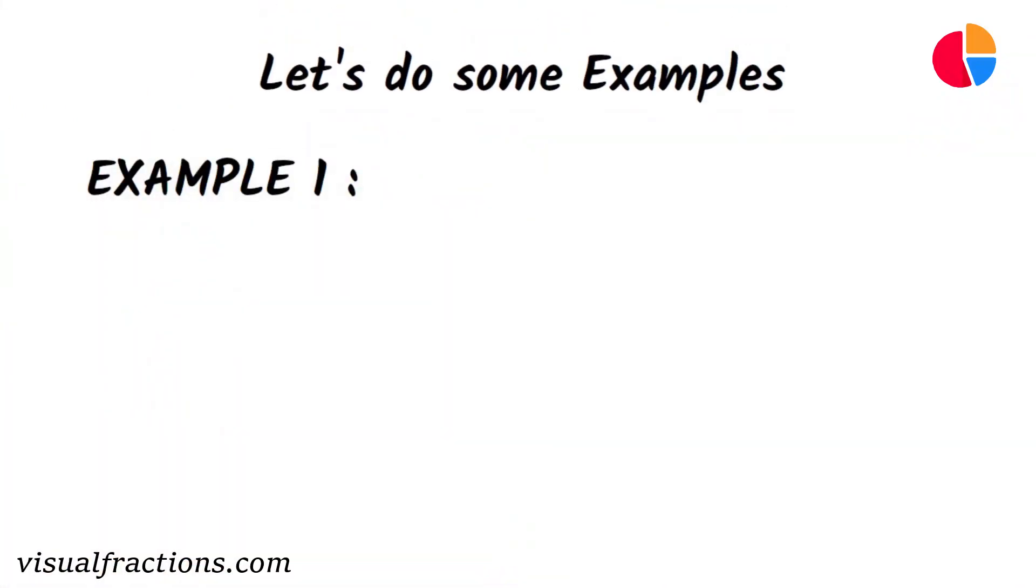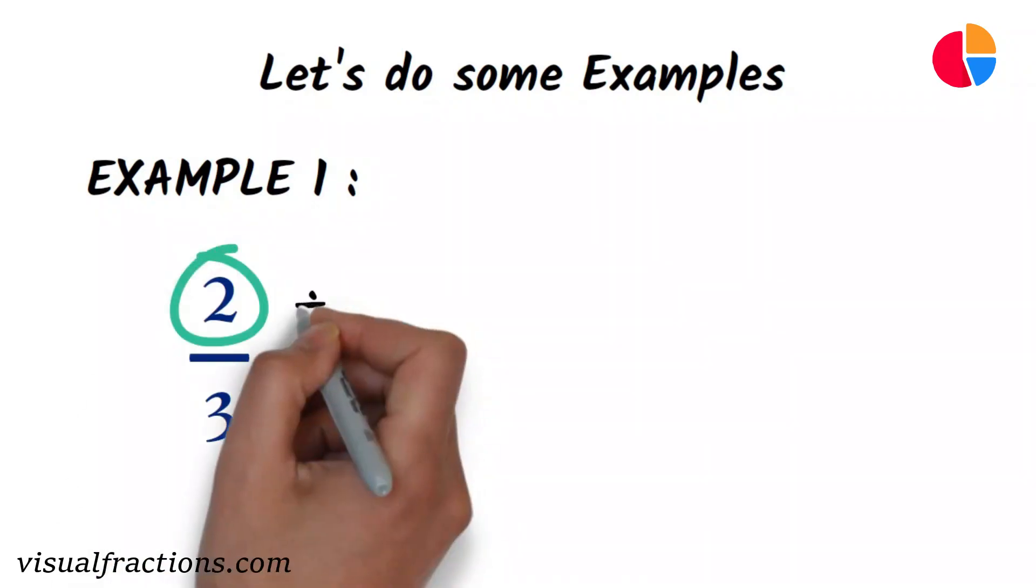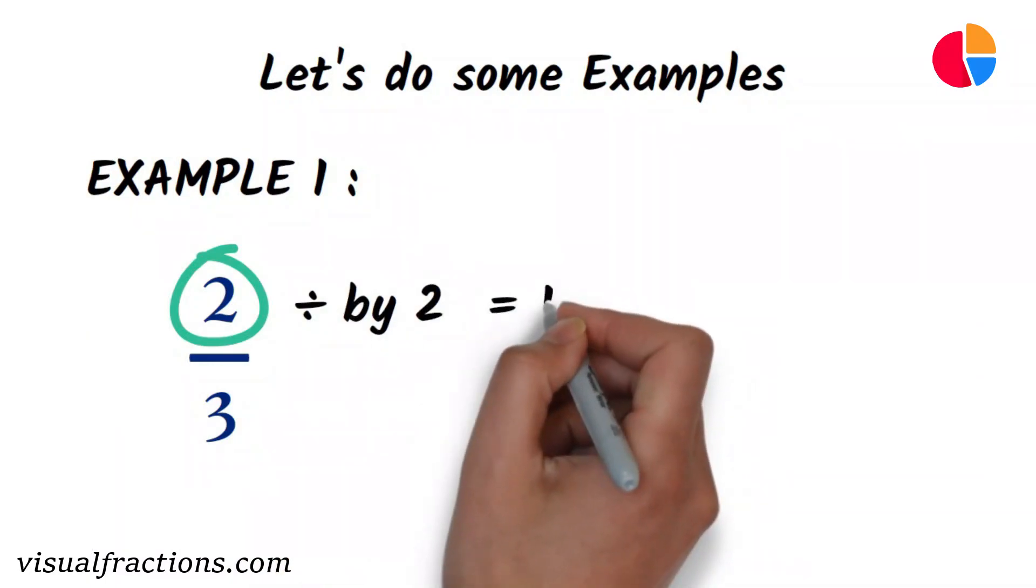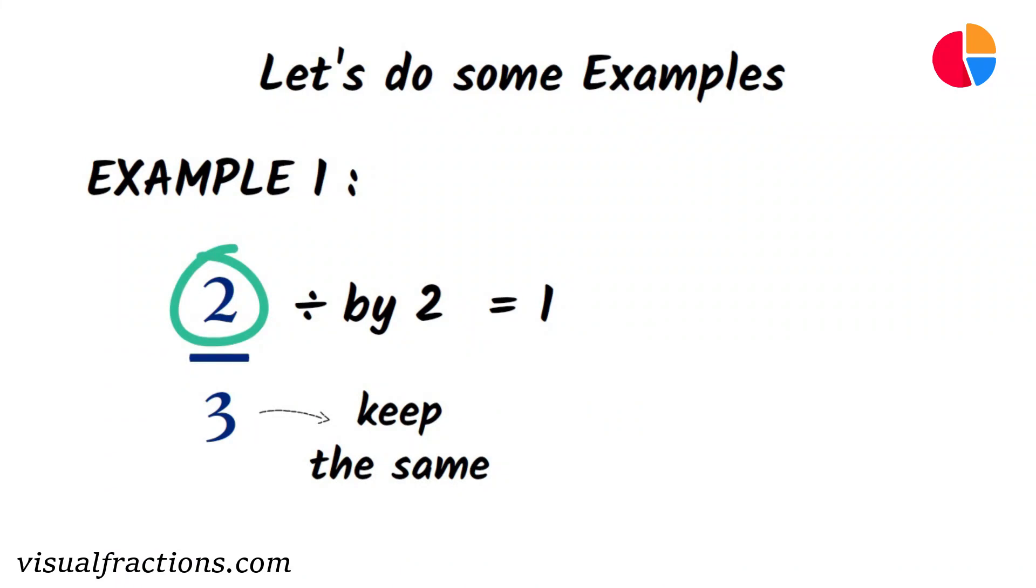Example 1: Let's say we want to find half of the fraction 2 thirds. To do this, we divide the numerator, 2, by 2, which gives us 1. We keep the denominator, 3, the same, so half of 2 thirds is 1 third.